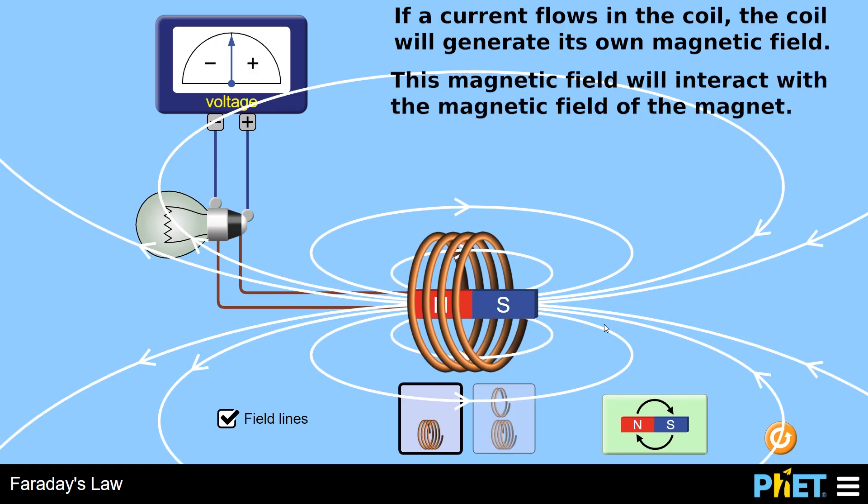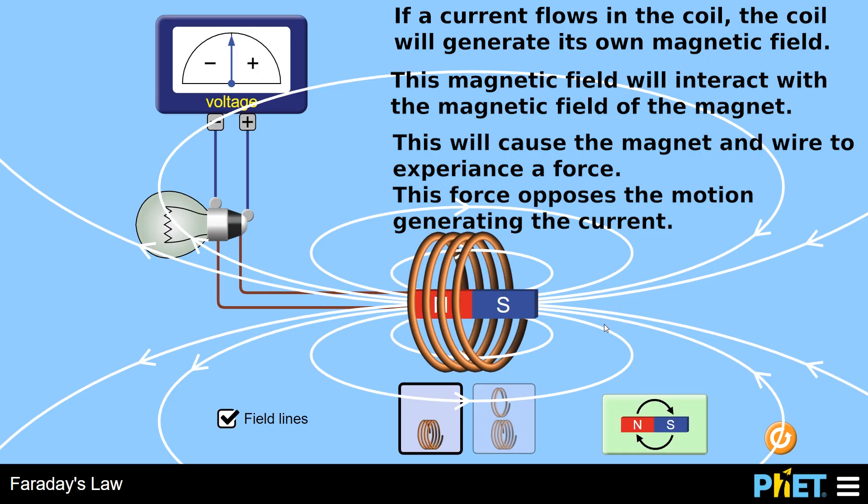And it just so happens that that force opposes the force that you apply to the magnet or that you apply to the coil. So this coil will generate a current which will generate its own magnetic field, which will oppose the motion of the magnet going through it.